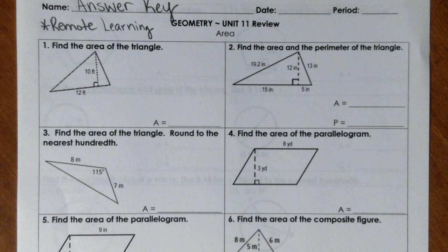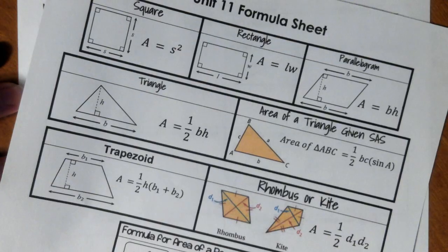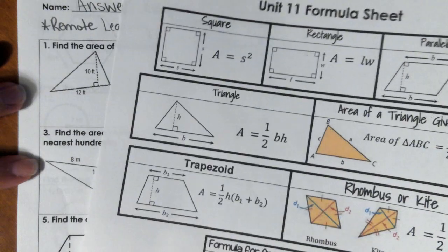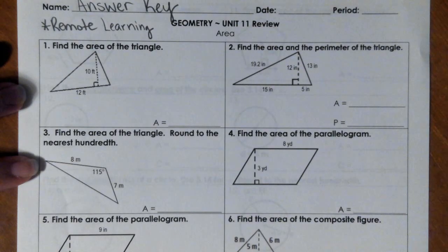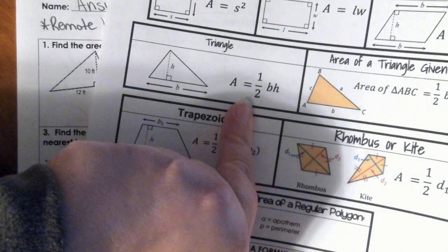This is the unit 11 review for geometry. This is the remote learning version of the test/review. The first three questions have to do with the triangle. Number one, find the area of the triangle. Have your formula sheet handy so it's easy for you to check the formulas. For a triangle, we have one half base times height.